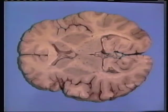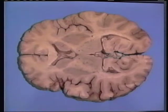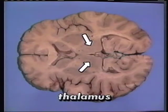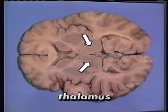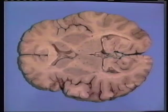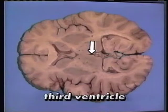As previously described, the diencephalon is surrounded by the cerebral hemispheres. The large thalamus, which is composed of bilateral masses of gray matter containing many different nuclei, forms the supralateral walls of the third ventricle.